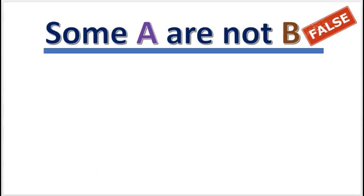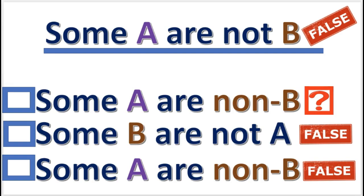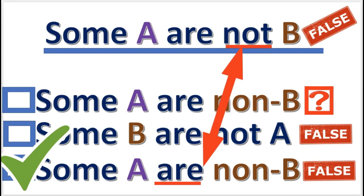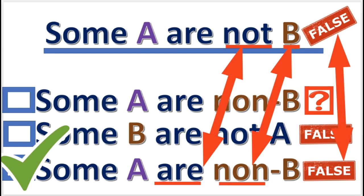Next practice problem: if this proposition is false, what is the obverse and truth value? The quality has been changed, and the predicate has been replaced with its complement. The truth value remains the same.